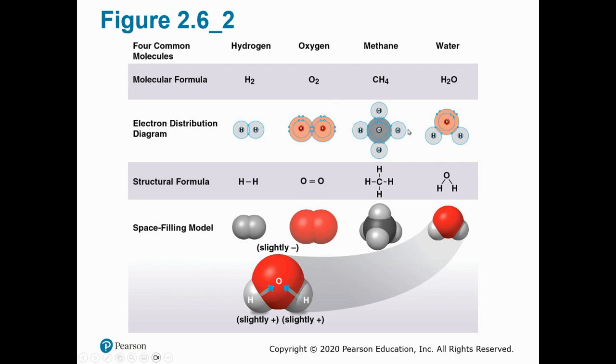Different examples of the covalent bond are here. You have hydrogen, they share with each other. That's a covalent bond, you're sharing the electrons with each other. Oxygen, this is a covalent bond, you're sharing the electrons with each other.